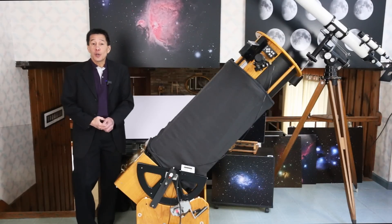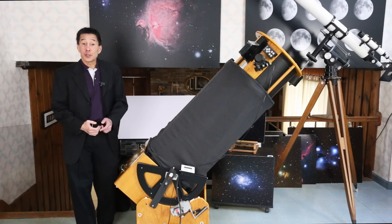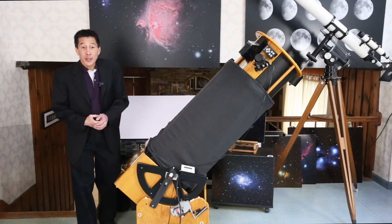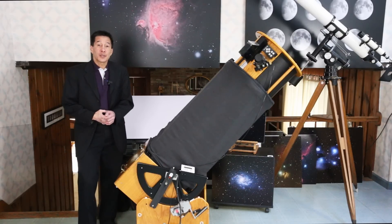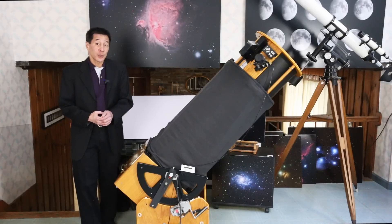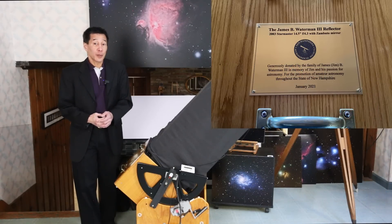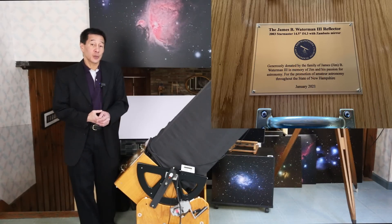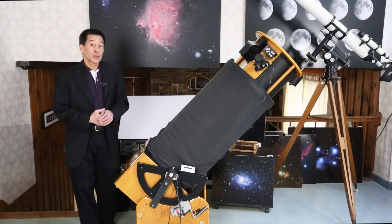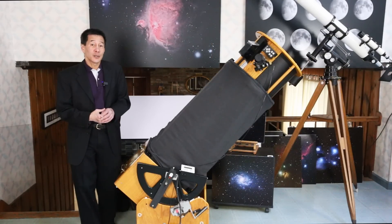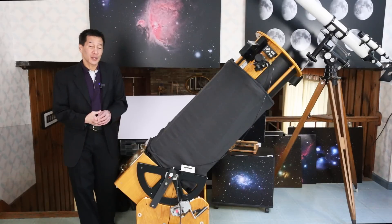So there you have it, an overview of the 14 and a half inch Star Master Dobsonian telescope. And again, we at the New Hampshire Astronomical Society express our great gratitude towards the estate of the club member who passed away in donating this to us. It is going into our observatory where I'm sure it will educate and entertain people for many years to come.